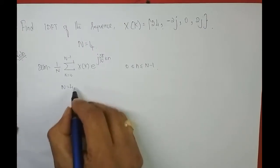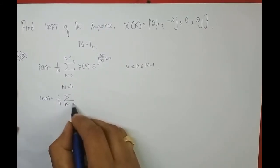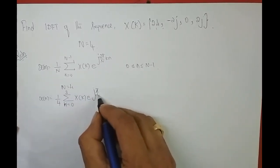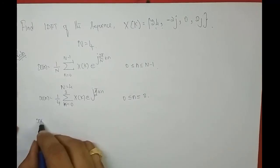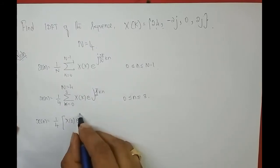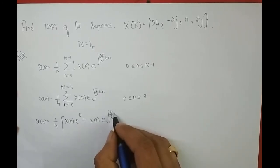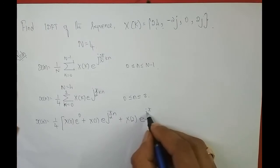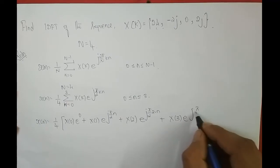With N equal to 4, x of n equals 1/4 times the summation from k=0 to 3 of X[k] times e^(jπ/2 × k × n), where n varies from 0 to 3. Expanding the summation: x of n = 1/4 × [X[0]·e^0 + X[1]·e^(jπ/2·n) + X[2]·e^(jπ/2·2n) + X[3]·e^(jπ/2·3n)].